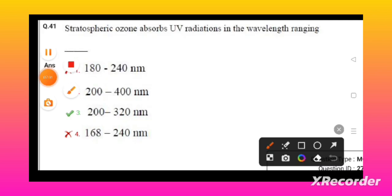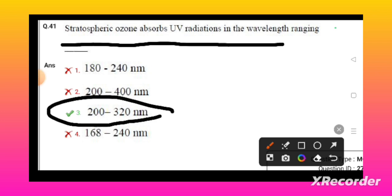Stratospheric ozone absorbs the UV radiation in the wavelength ranging from 200 to 320 nanometers.